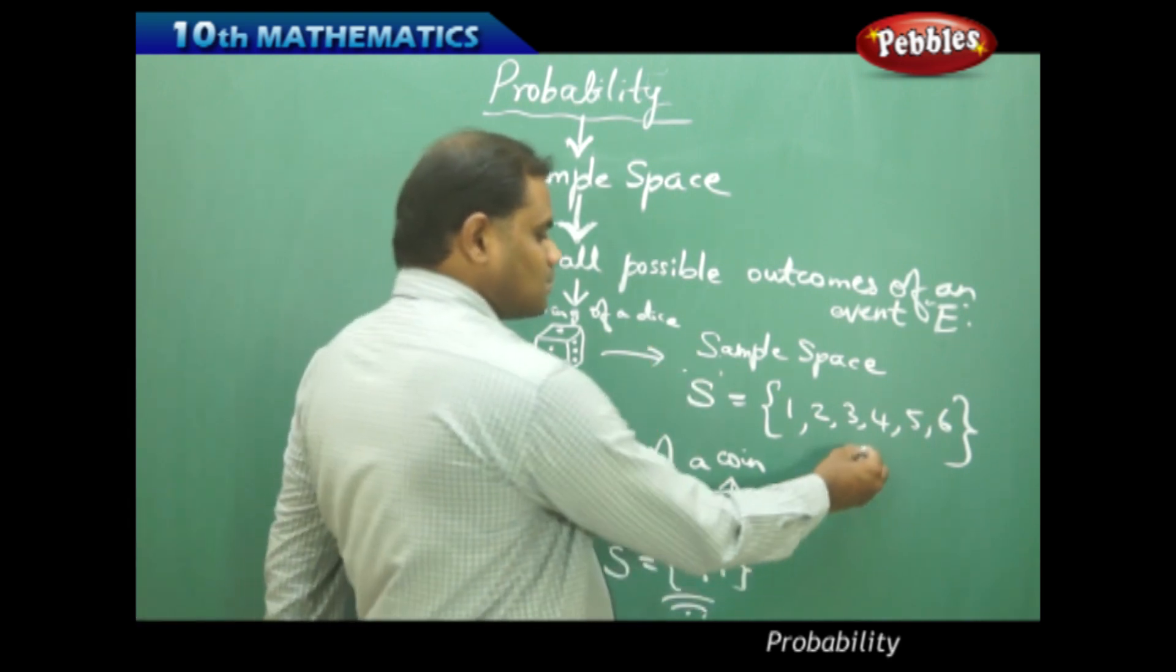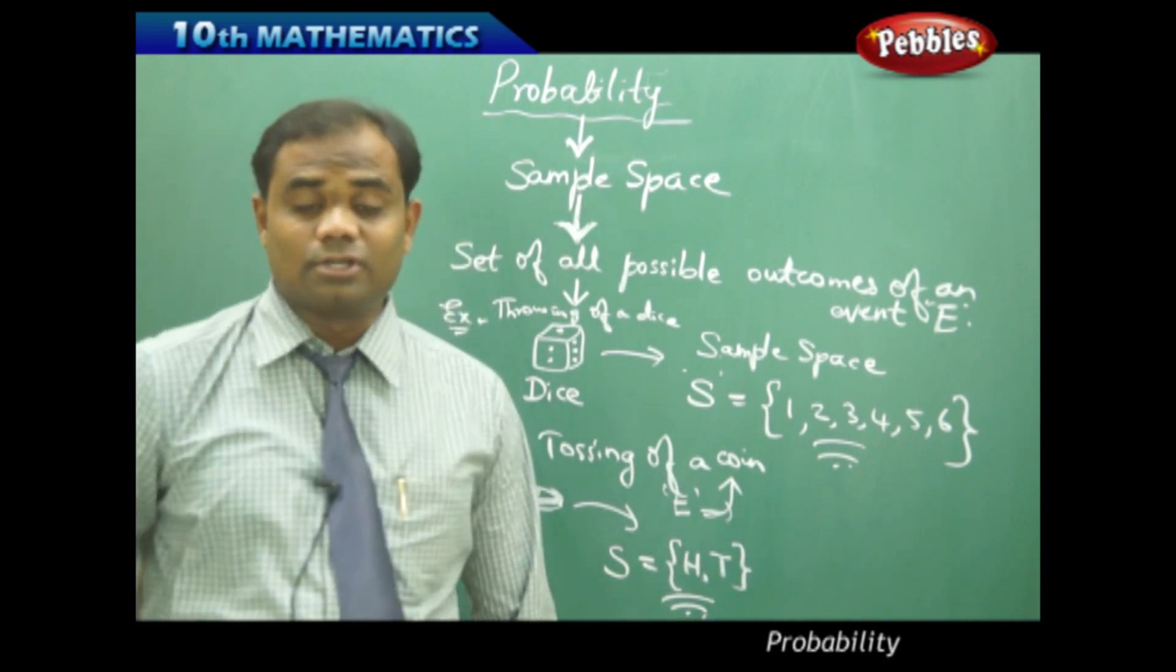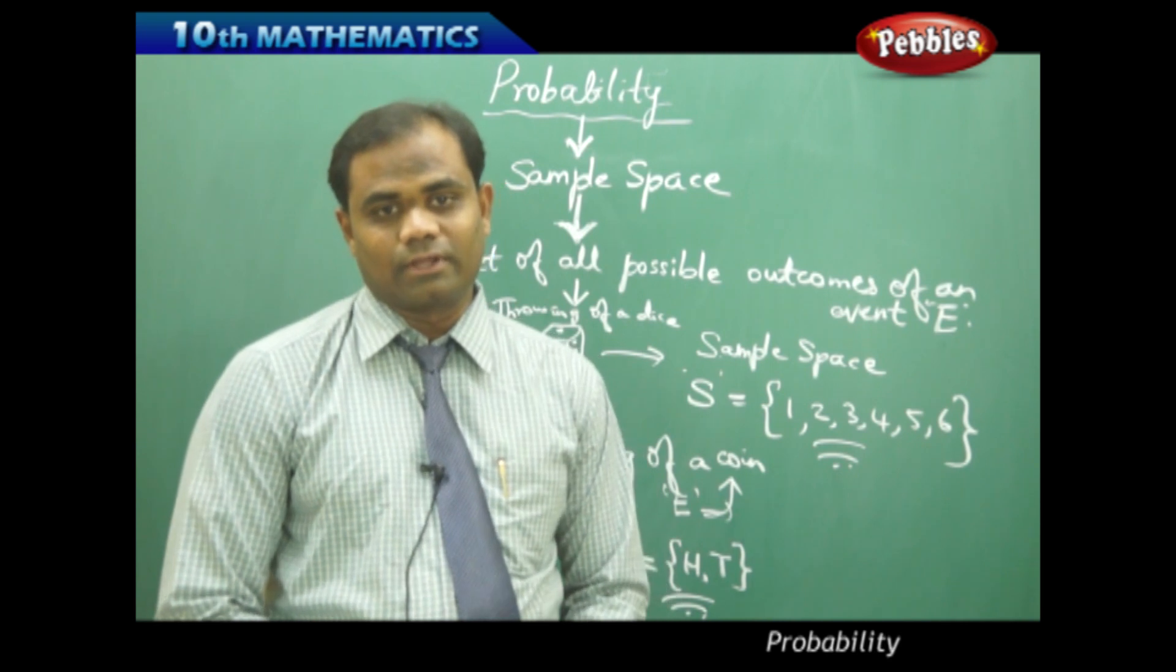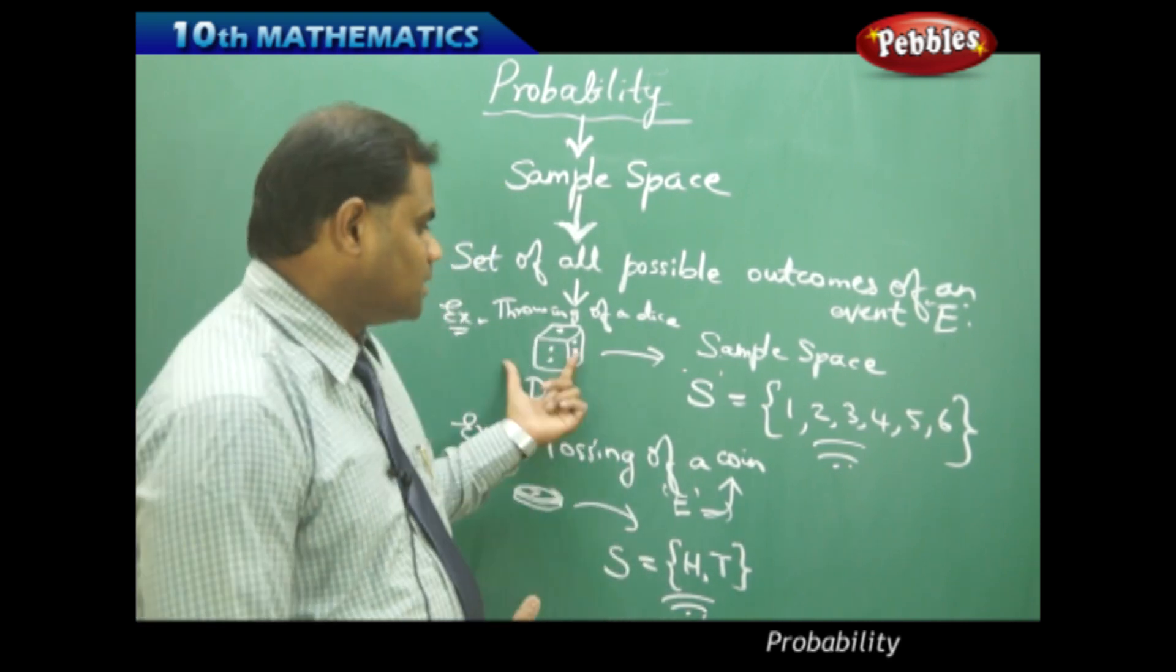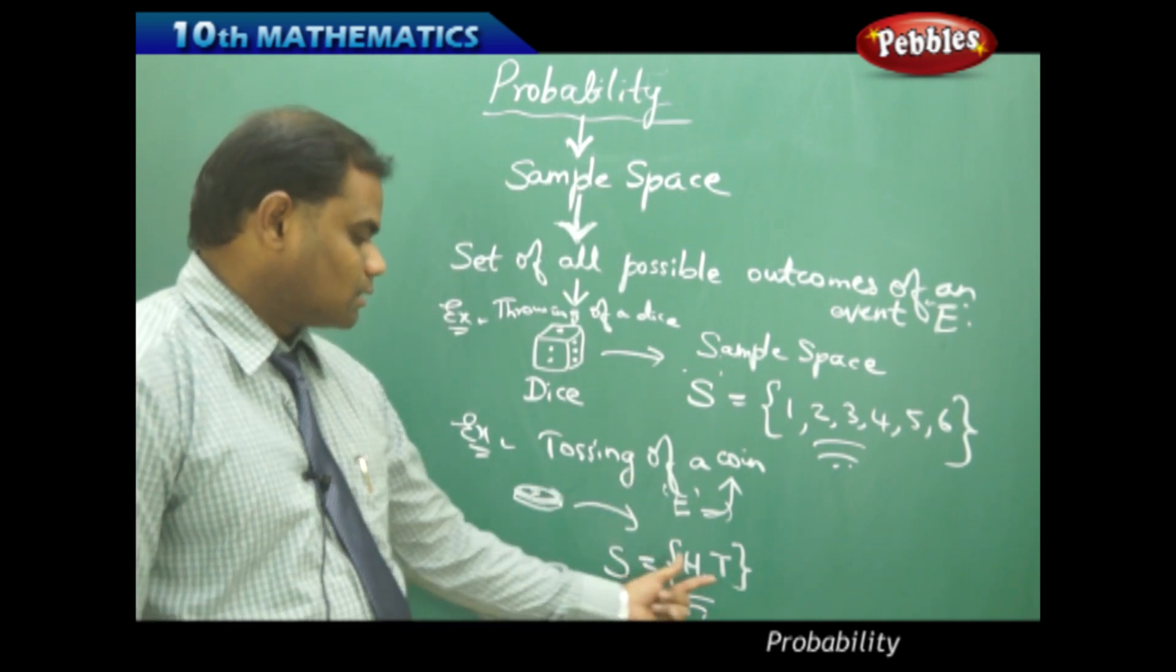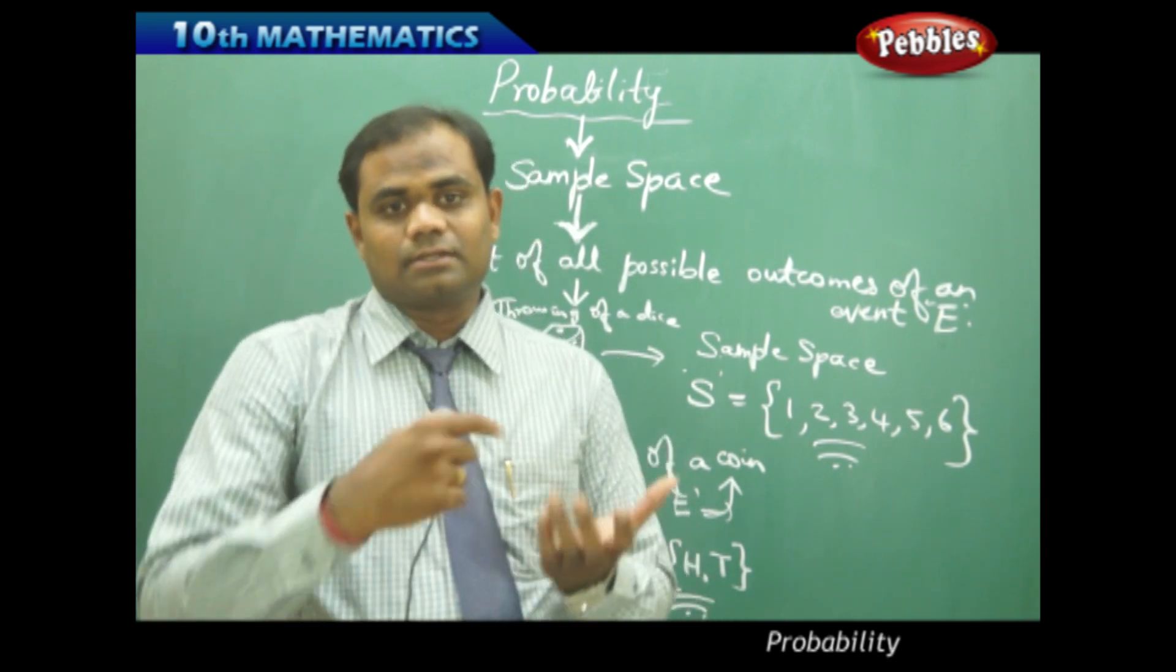In this problem, the sample space is this. This is how we understand the sample space: it is the set of all possible outcomes of an event E. For dice, the possible outcomes are one to six, and for a coin, the possible outcomes are either head or tail.